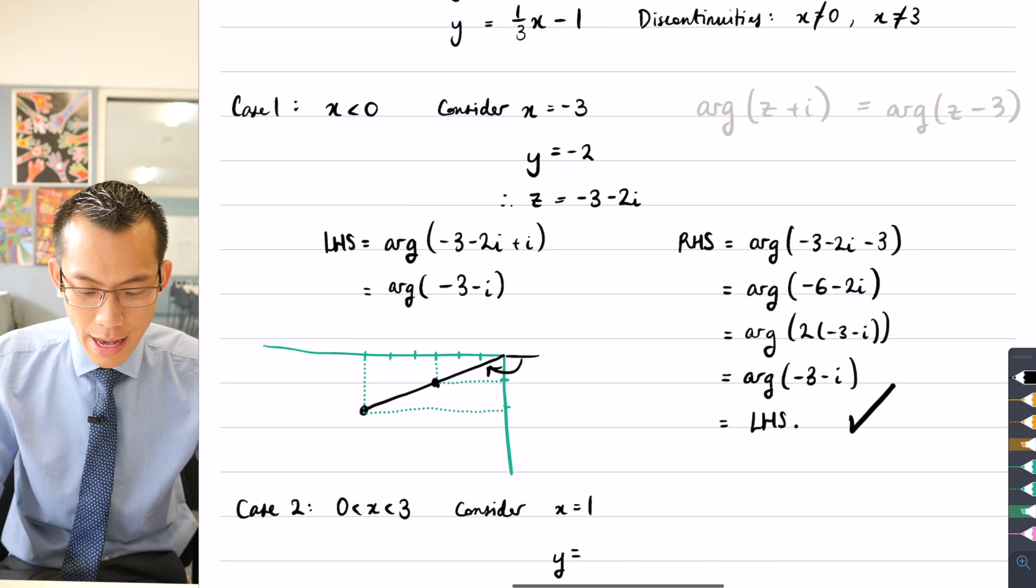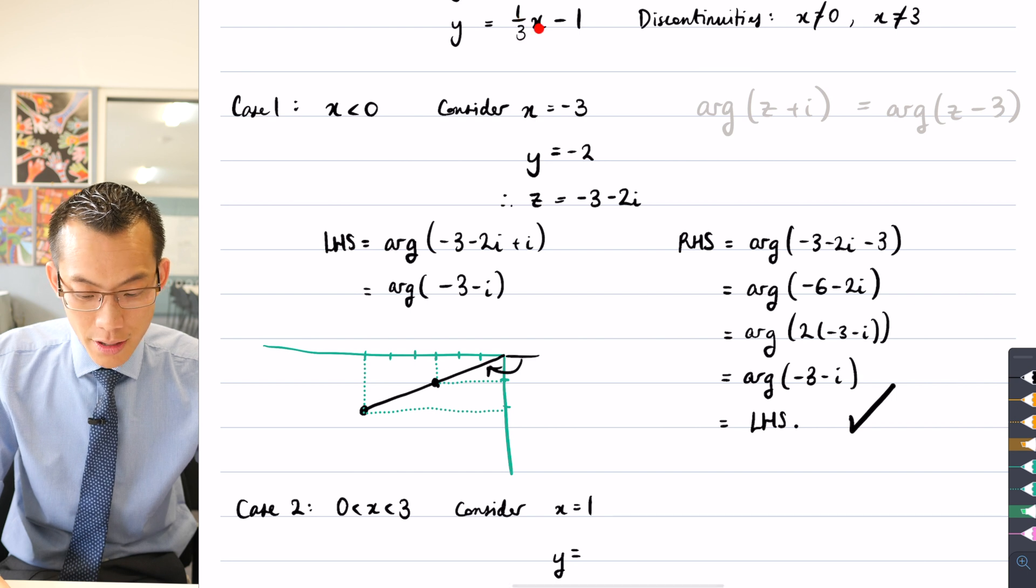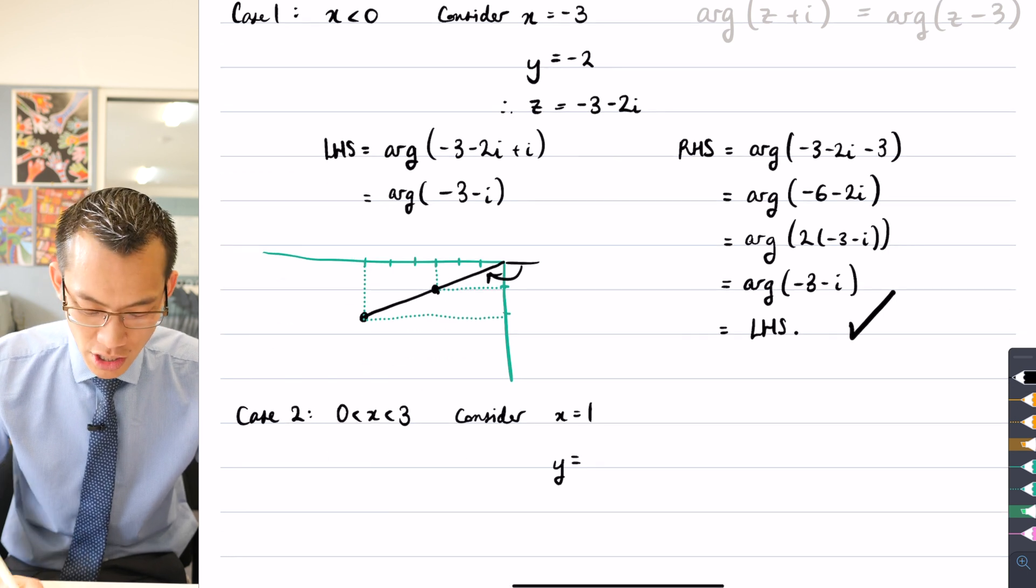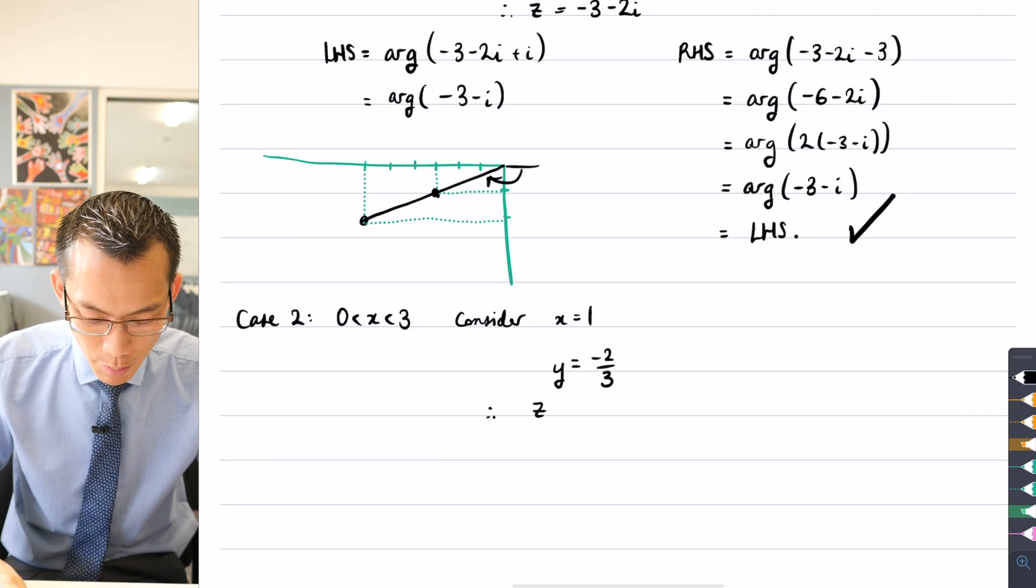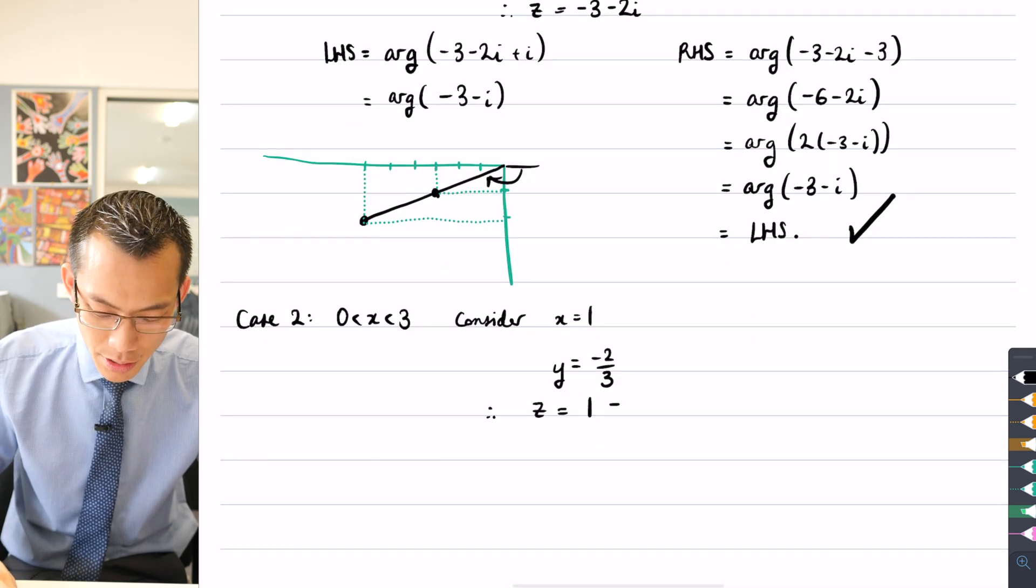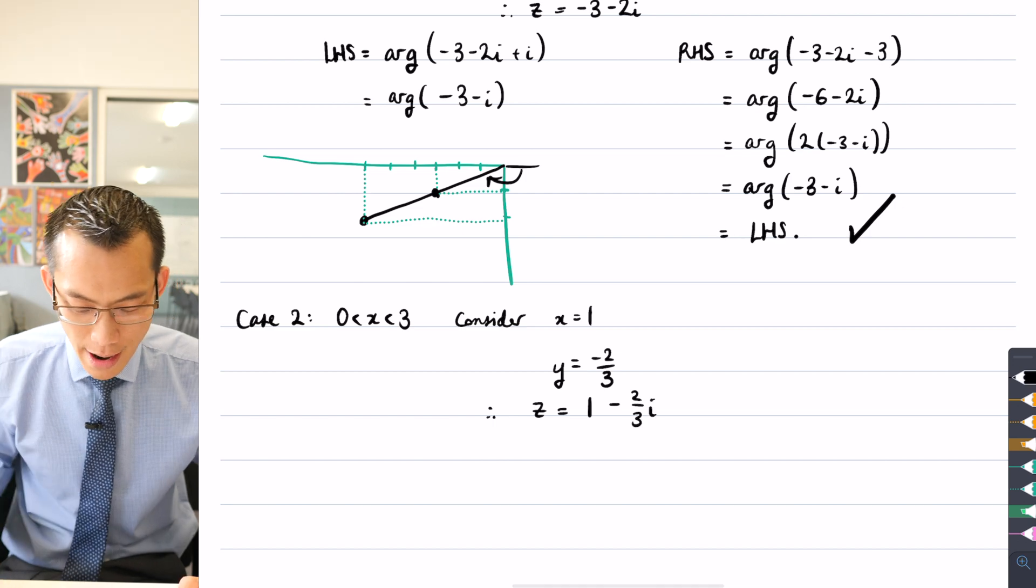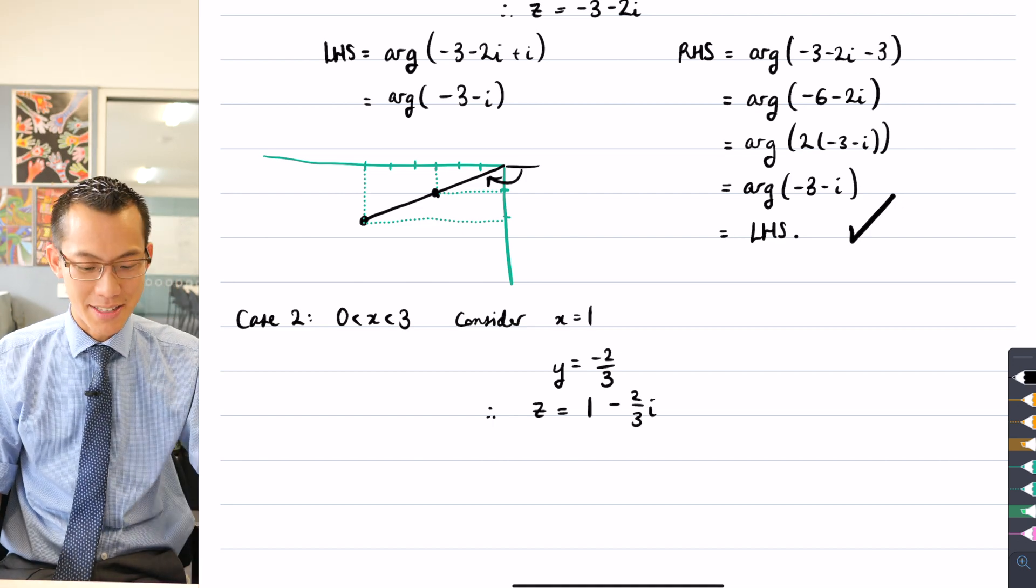So if x equals one, then the y value that goes with that is a third minus one. Last I checked, that's negative two thirds. So therefore, the complex number I get with this is one minus two thirds i. All right, so now I have to test this thing out.